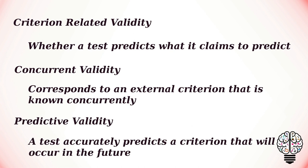Predictive validity is the degree to which a test accurately predicts a criterion that will occur in the future. For instance, a prediction may be made on the basis of a new intelligence test that high scorers who are 12 years old will be more likely to obtain university degrees several years later. If the prediction is borne out ultimately, then the test has good predictive validity.